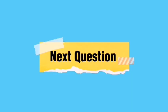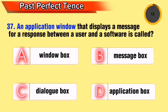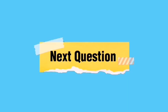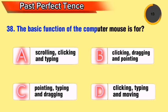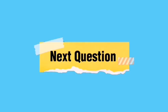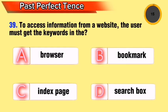Question 20: An application window that displays a message for a response between a user and a software is called what? Question 21: The basic function of the computer mouse is for what? Question 22: To access information from a website, the user must enter the keywords in what field?